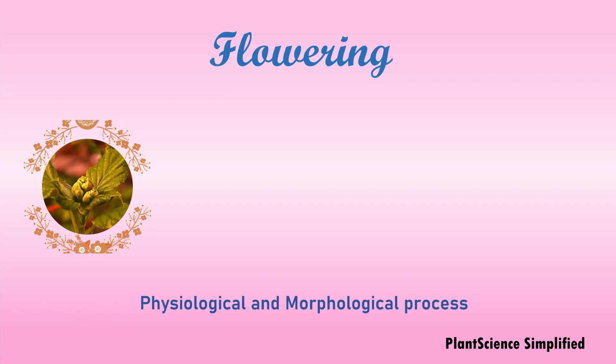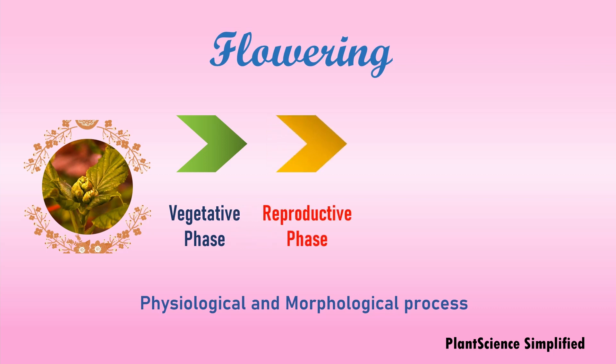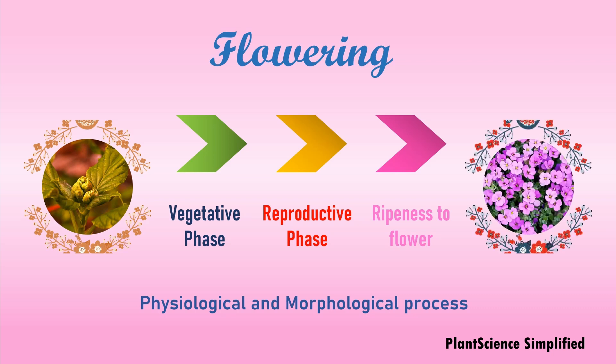When the plant is very young, it will be under vegetative phase, meaning it is not genetically programmed to produce flowers. But once it reaches the reproductive phase, it is capable of producing flowers. That particular capacity to produce flower is called as ripeness to flower, which results into the flowering.